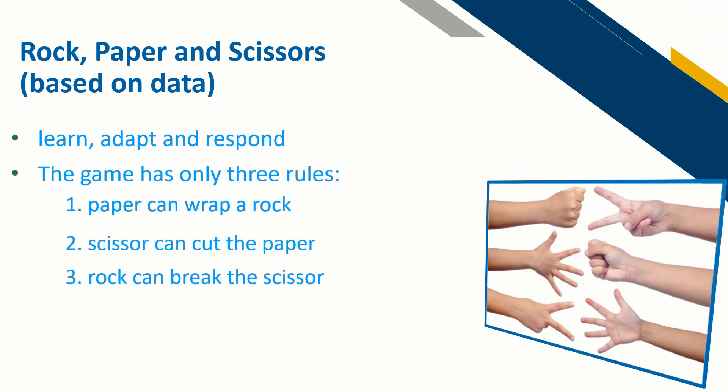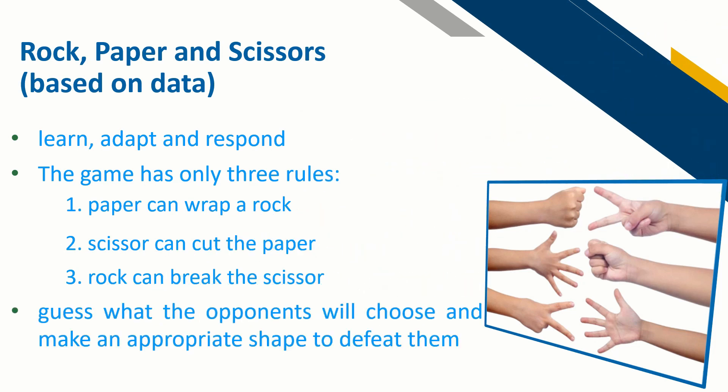The game has three simple rules: a paper can wrap a rock, a scissor can cut the paper, and a rock can break the scissor. The players of this game will have to guess what the opponent will choose by making the appropriate shape to defeat them.